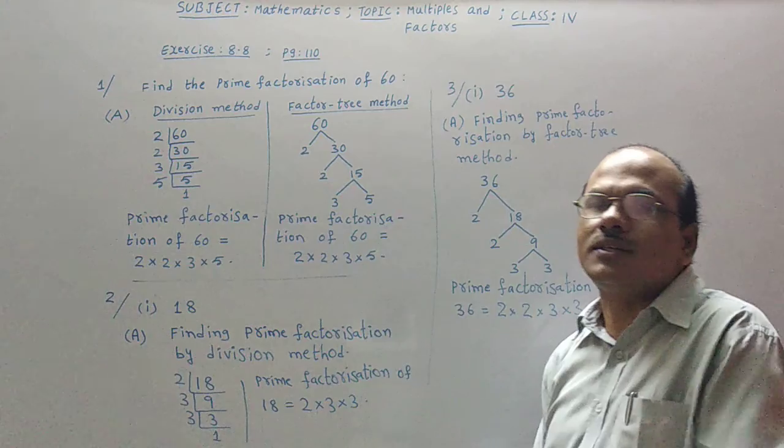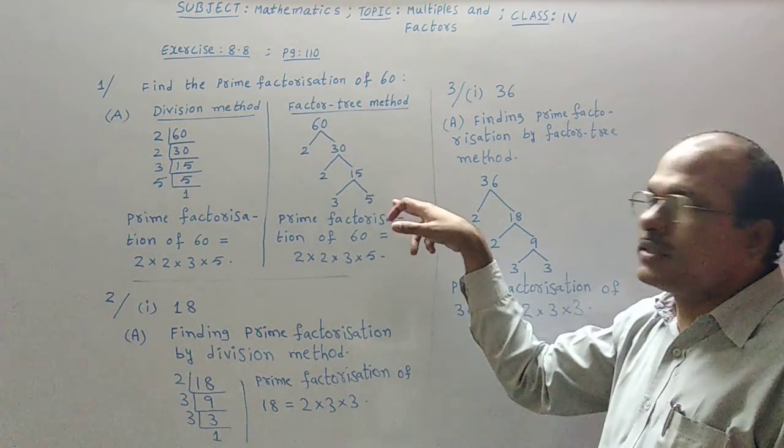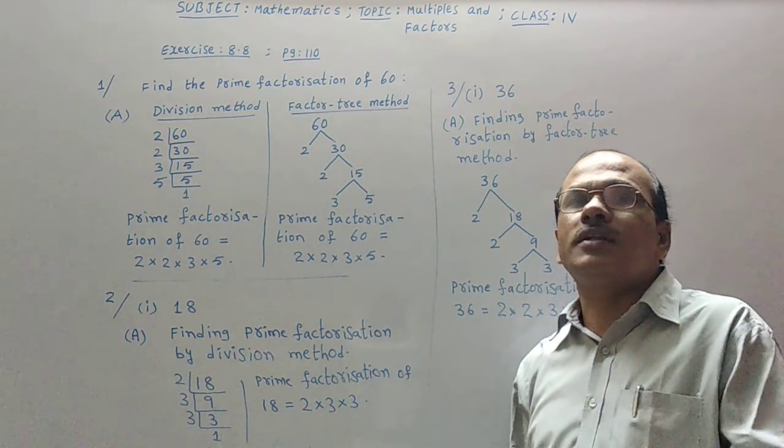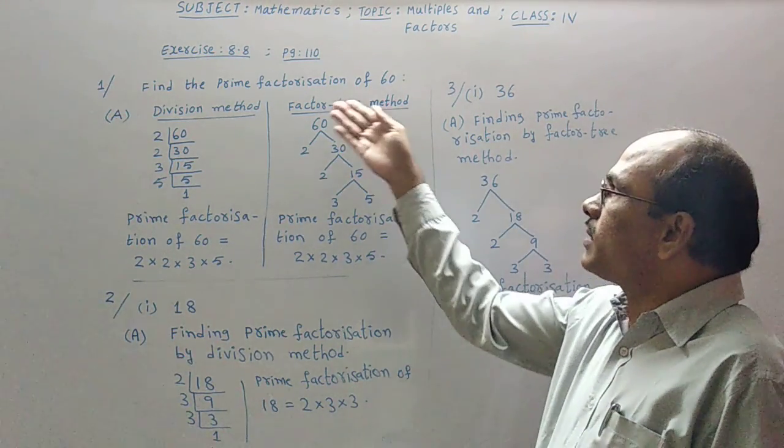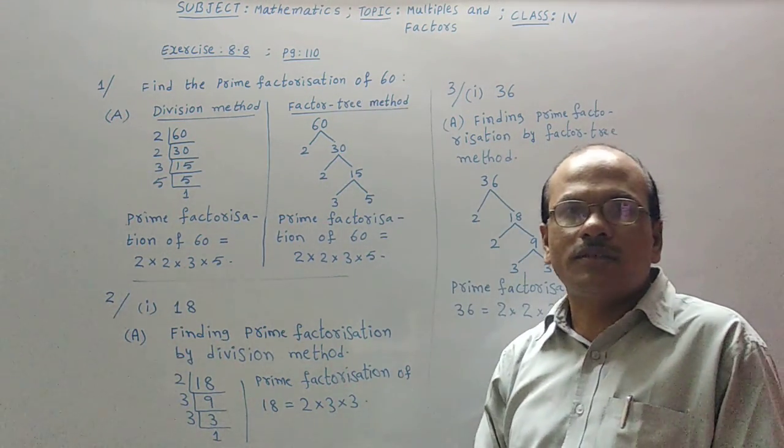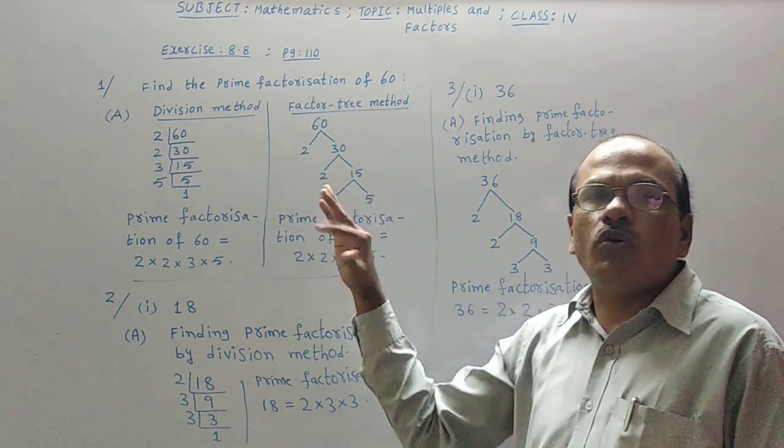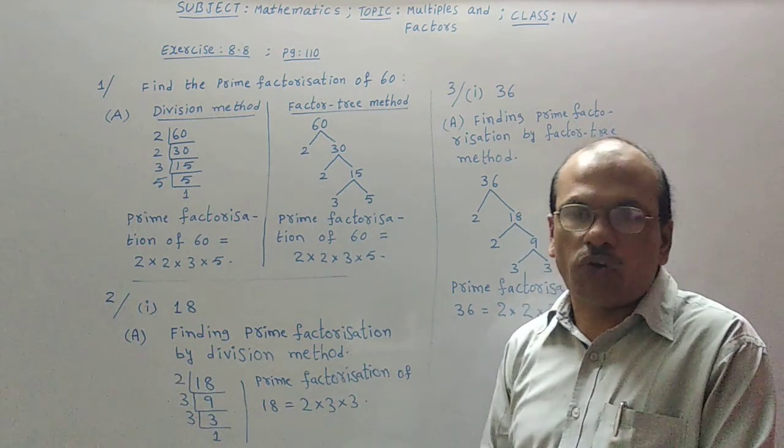I hope both the methods are clear for you. Here these arrangements like arrow marks, they were appearing like branches. Branches are seen on the trees, so that is why it is a factor tree method. This is one method, the division method. Both the methods will give you the same answer for the prime factorizations.